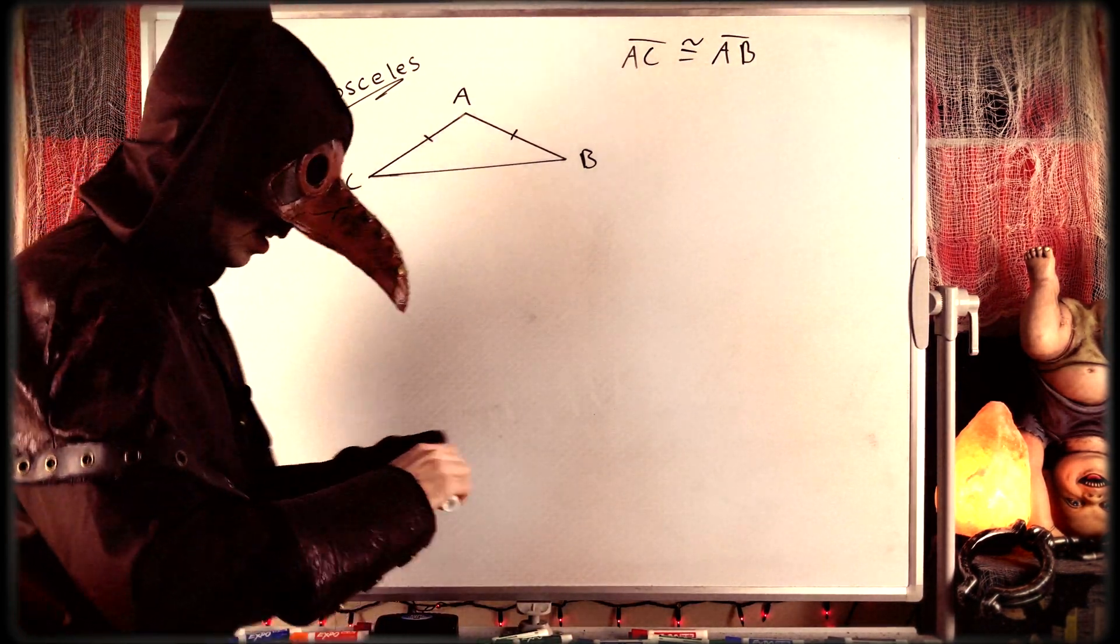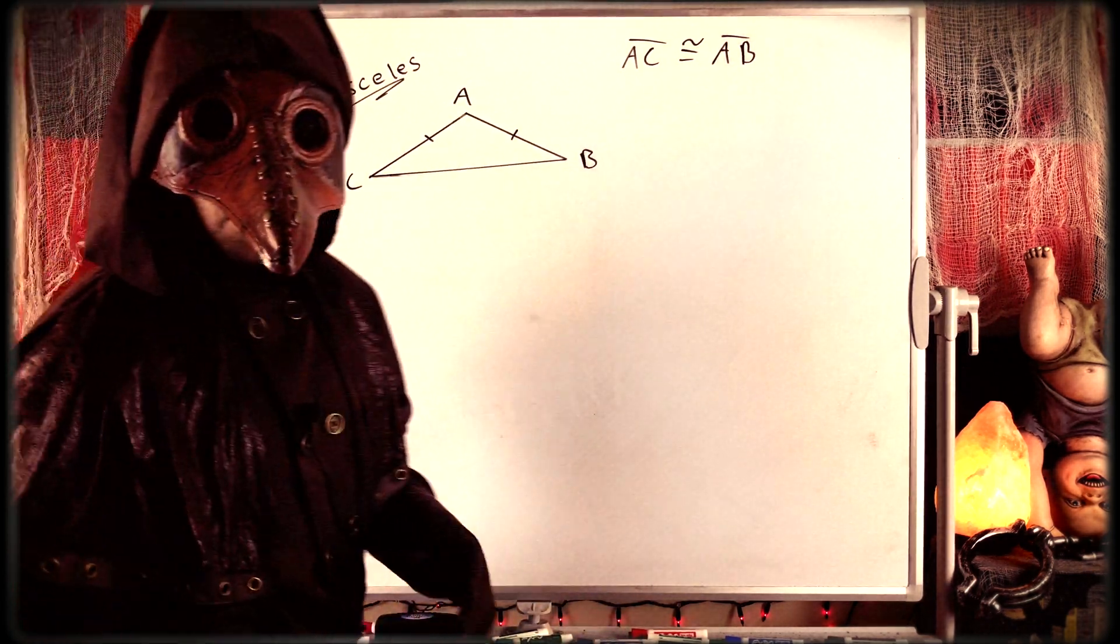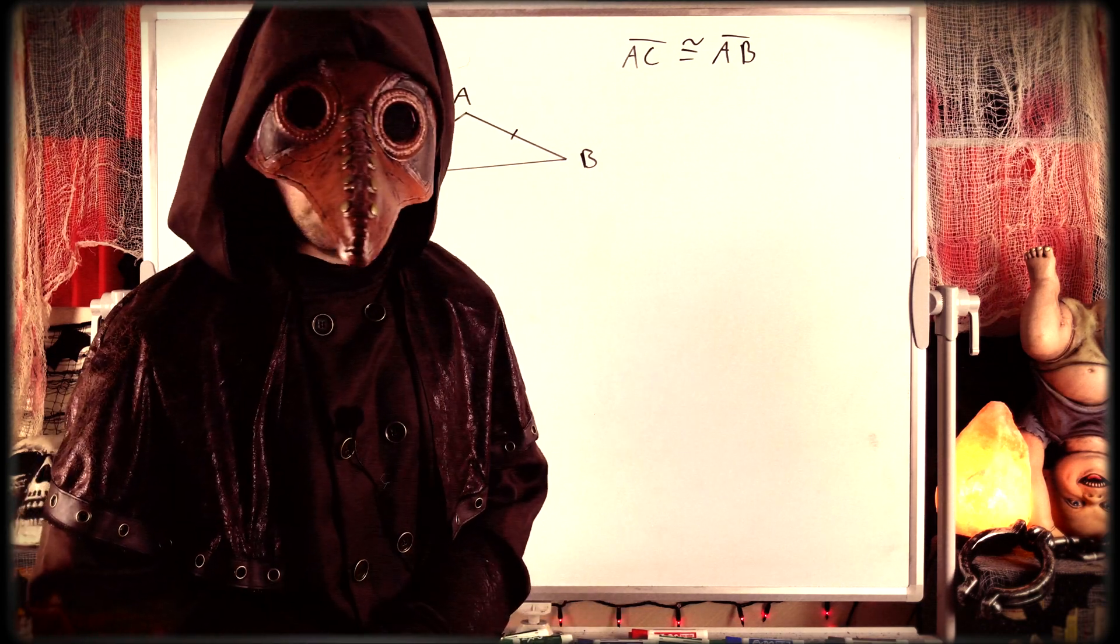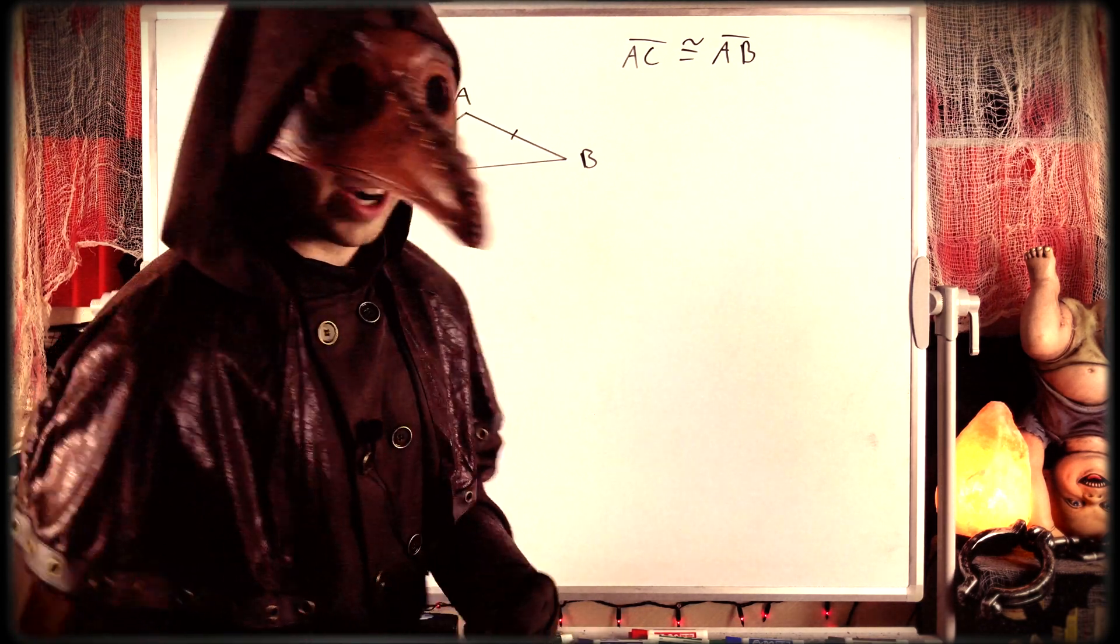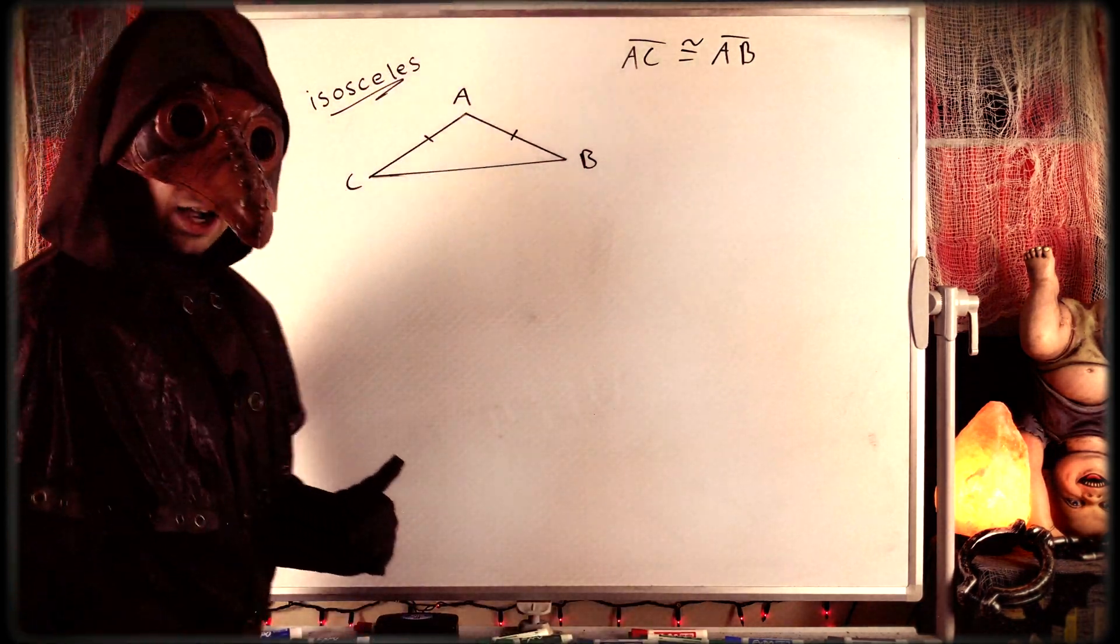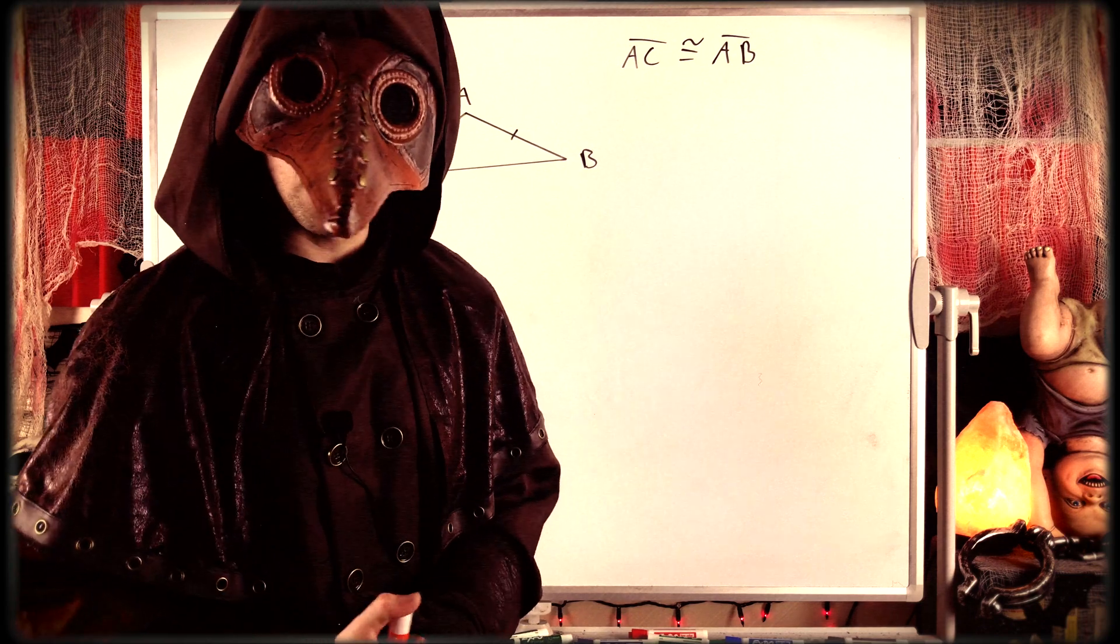Of course, I just clipped my glove into this marker. It's often the case that when we want to prove segments or angles are congruent, we want to do that by proving that two triangles are congruent. In this case, we've only got one triangle. So what could we do to construct two useful triangles?